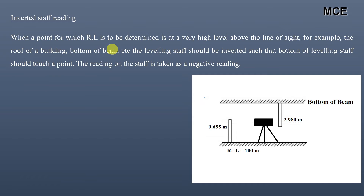For this problem, we are taking the back sight on a floor which has a reduced level of 100 meters, and our back sight reading is 0.655 meter. We are holding the staff in an inverted direction at the bottom of the beam and getting the foresight reading of 2.980 meter.